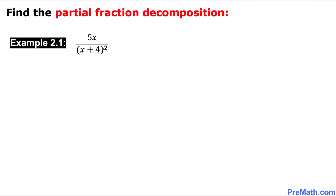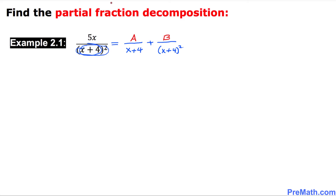Here is our very first example. We are going to find the partial fraction decomposition of this rational expression. Always focus on the denominator. Our denominator is x plus 4 power 2, meaning it repeats twice, so we are going to put two fractions. The first denominator is x plus 4, and the next is x plus 4 power 2. The numerators will be A for the first fraction and B for the second. I will show how to find A and B values later.